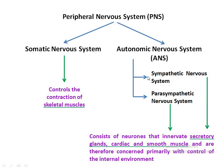The autonomic nervous system consists of sympathetic and parasympathetic nervous systems. They consist of neurons that innervate secretory glands, cardiac, and smooth muscles, and are therefore primarily concerned with control of the internal environment. The autonomic nervous system controls the activity of different visceral organs so that these organs can be regulated automatically.